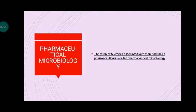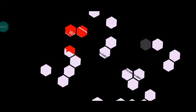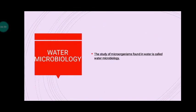इसमें क्या होता है कि Microorganism को हम use करके pharmaceutical products बनाते हैं, उनकी manufacturing करते हैं. जैसे कि drug हो गया, या vaccine हो गई — क्योंकि अगर bacteria या virus की disease हो जाती है, तो उन diseases को हम protect कर सकें. तो ये सारा pharmaceutical microbiology इसमें ही होता है.